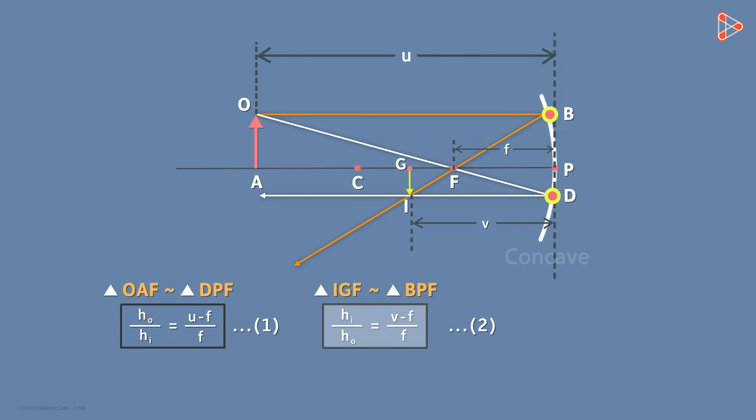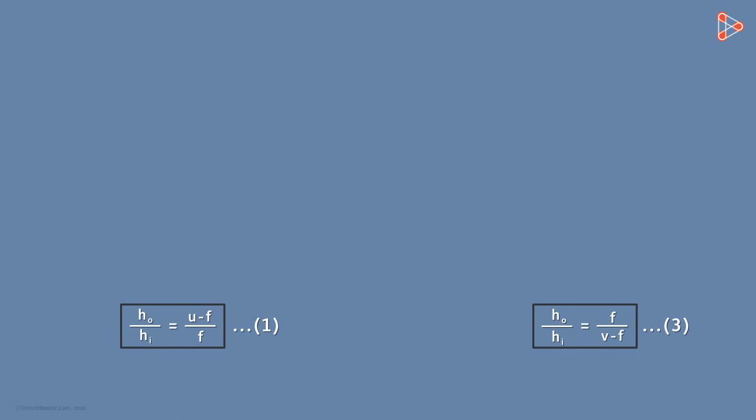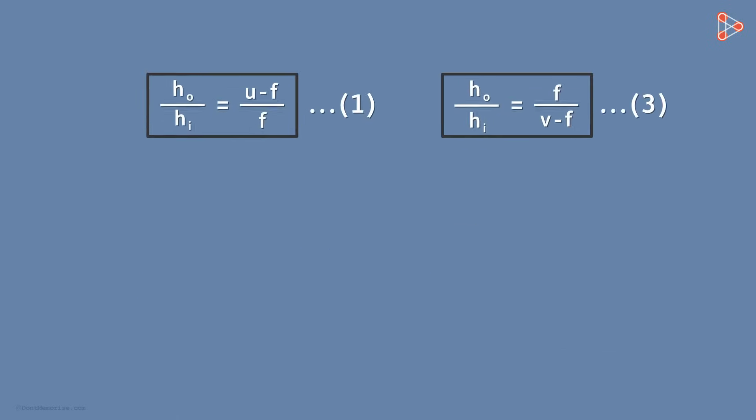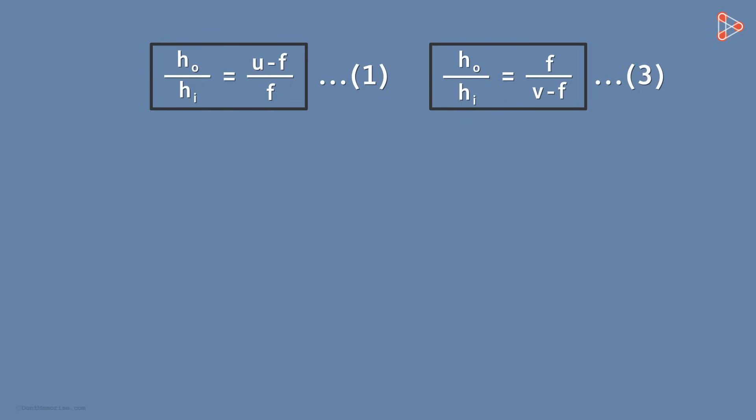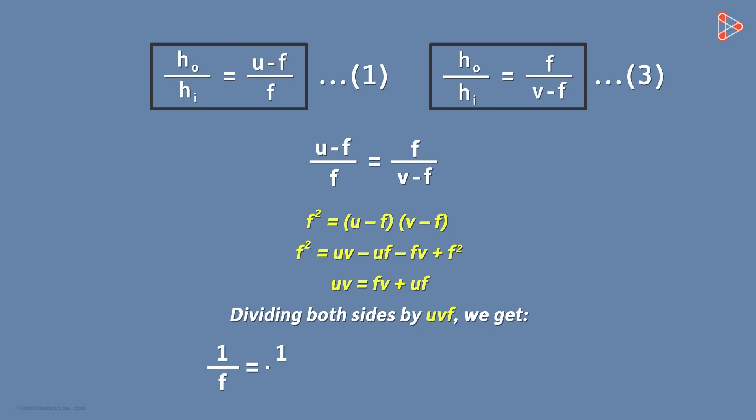Now let's invert equation 2 to get the third equation. We are almost there now. So we have these two equations now with us. They both have the same term on one side of equal to sign. So the other two sides will be equal. Cross multiplying and solving further will finally give us the required mirror formula. Finally, we have our mirror equation in front of us. It was fun to derive it, wasn't it?